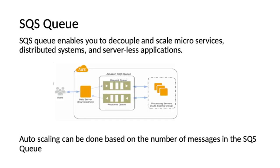For the AWS Solutions Architect Associate exam, you may hardly get a question based on SQS, but if there is one, it will be regarding the autoscaling option based on the number of SQS messages. The number of messages in the SQS queue are monitored and a policy can be created with a threshold number of messages to push the autoscaling group to scale up or down.